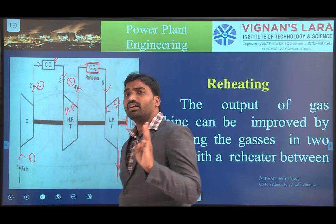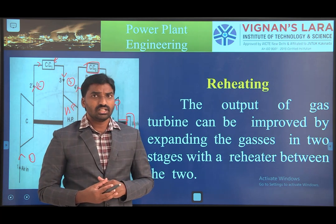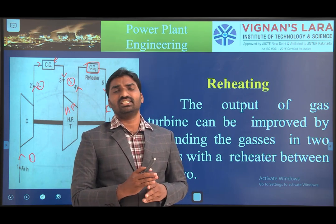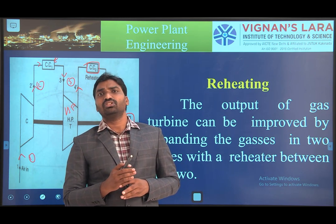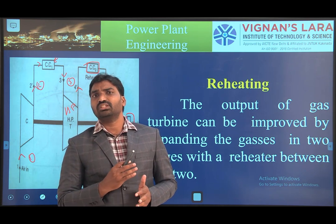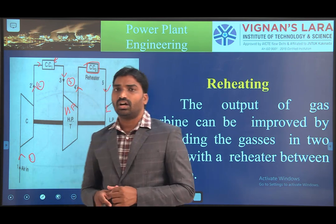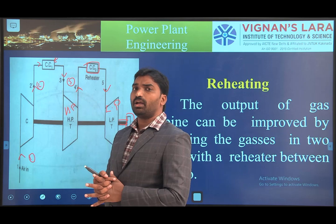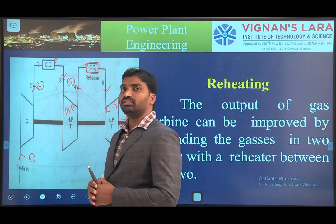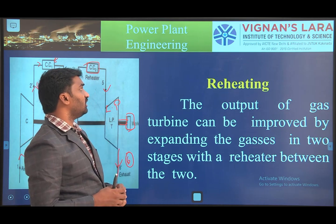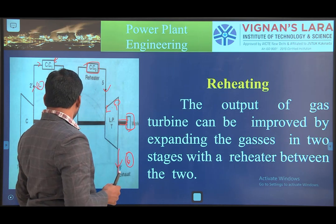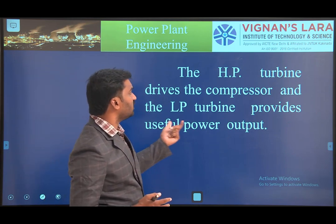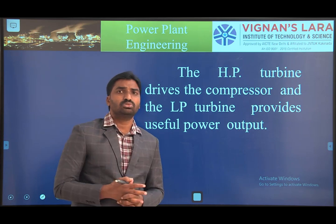To summarize two key things: in the intercooling process, we use two compressors — first a low pressure compressor, then a high pressure compressor — with an intercooler placed between them. In the reheating process, we use two turbines — one high pressure turbine and one low pressure turbine — with a reheater between them. The high pressure turbine drives the compressor, and the low pressure turbine provides the principal power output.